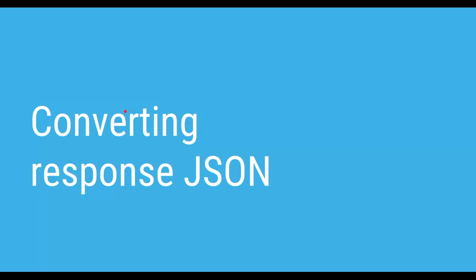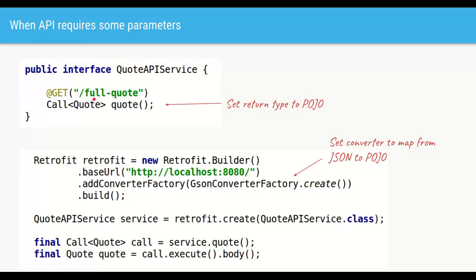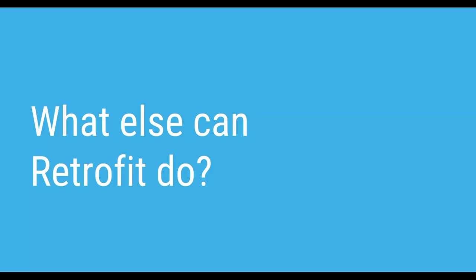The last topic is converting a JSON response. If the Quote Service has a full quote API that returns a quote as a JSON string rather than a plain string, we change the interface path to full quote and change the return type to the Java class that maps to that JSON. When building the Retrofit client, instead of the Scalar factory, use the Gson or Jackson factory — these factories are responsible for converting JSON into Java objects. When calling the service, Retrofit will directly map the response to your object automatically.